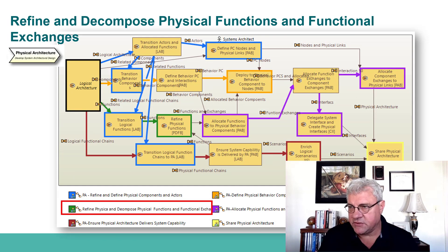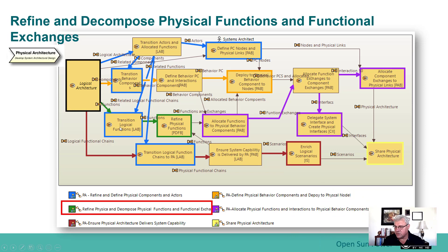We're using functions that were already transitioned. You can see here we've transitioned and we're focused on the screen flow right here, refining the functions. We will use a PDFB — that's the Physical Data Flow Blank diagram — to basically decompose functions when they need to be decomposed.